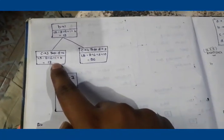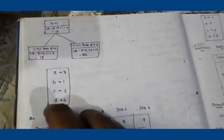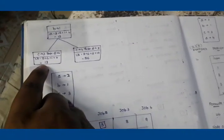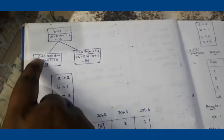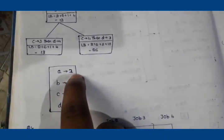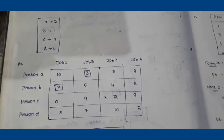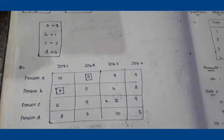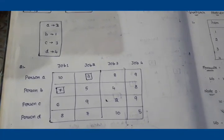Comparing the two leaf nodes, the minimum value is 13, so the optimal assignment is: A assigned to Job 2, B assigned to Job 1, C assigned to Job 3, and D assigned to Job 4, with a total cost of 13. There is also a practice question given for you to note down, complete, and submit as an assignment this week. Thank you.